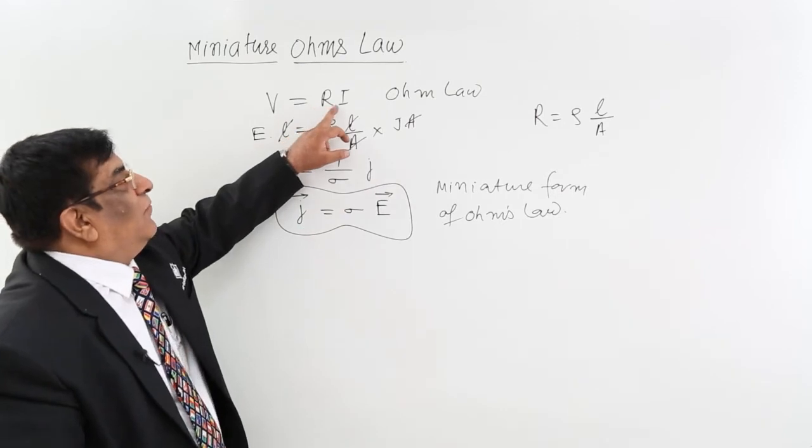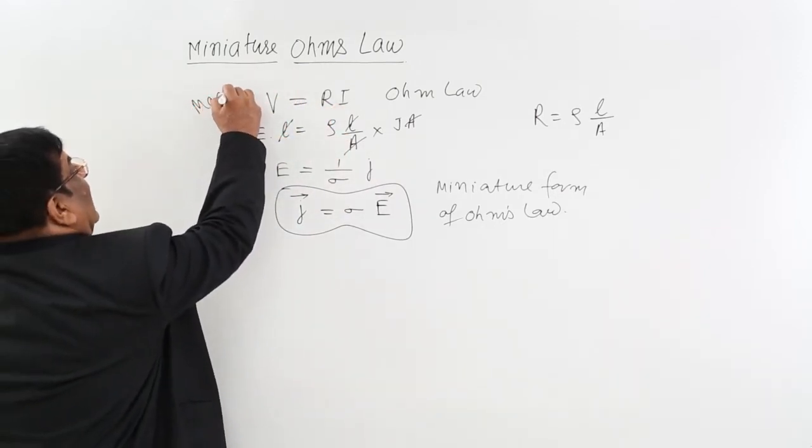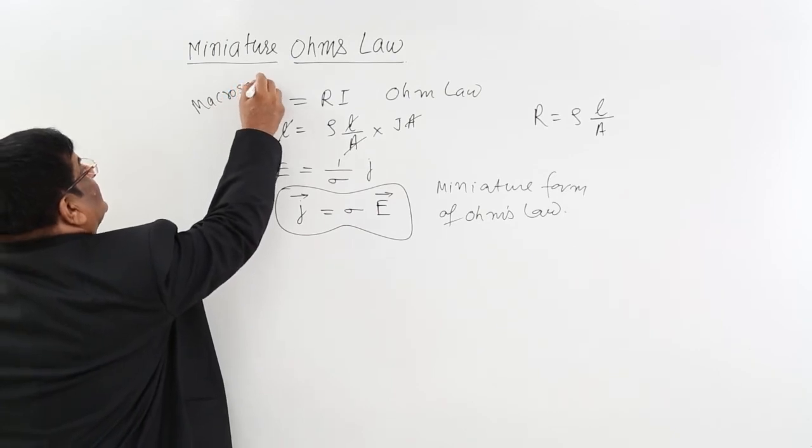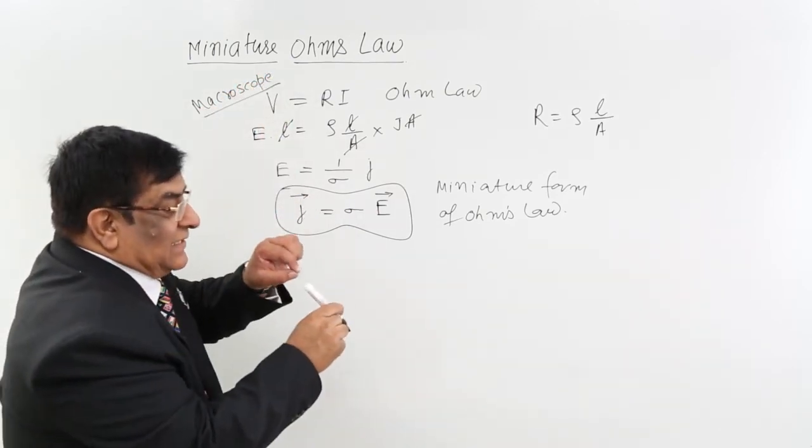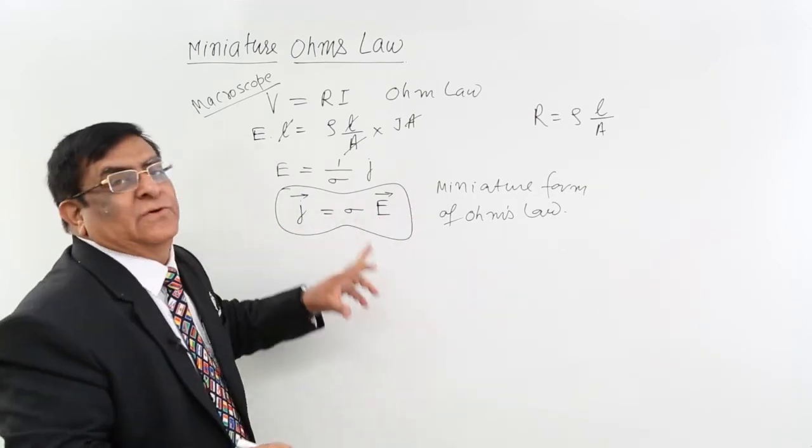So this is full form, macroscopic, means what we see in the lab. This we don't see in the lab. It is inside the conductor in miniature form. This is miniature form of Ohm's law.